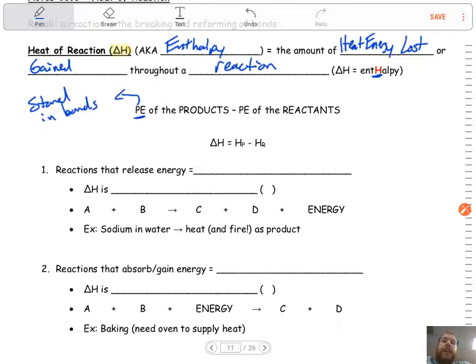So how we calculate delta H is we take the potential energy of the products minus the potential energy of the reactants. So if you think about this in terms of like where it all sets in a reaction, it's kind of like final minus initial. And we've done that before with delta T, where it's the final temperature minus the initial temperature.